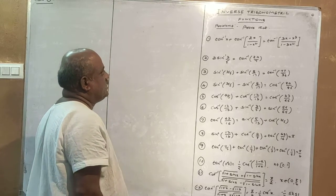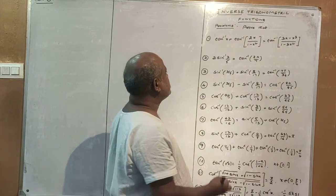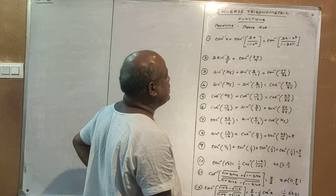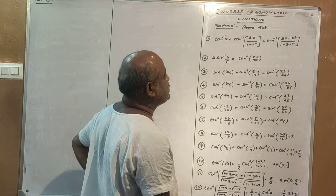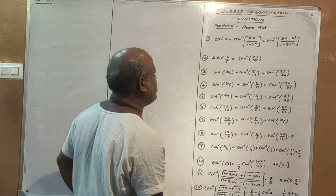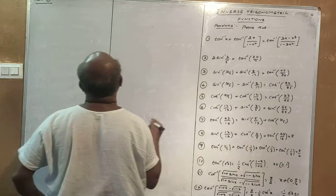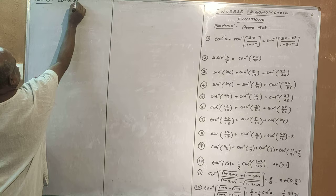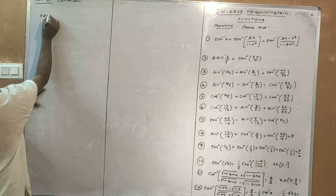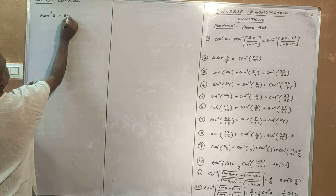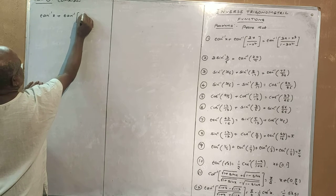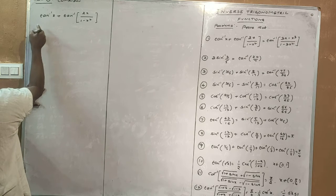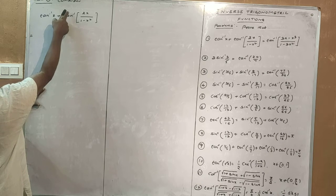We are going to take a look at tan inverse x plus tan inverse of 2x divided by 1 minus x squared, which is equal to tan inverse of 3x minus x cubed divided by 1 minus 3x squared. We use the identity: tan inverse x plus tan inverse y equals tan inverse of (x plus y) divided by (1 minus xy).